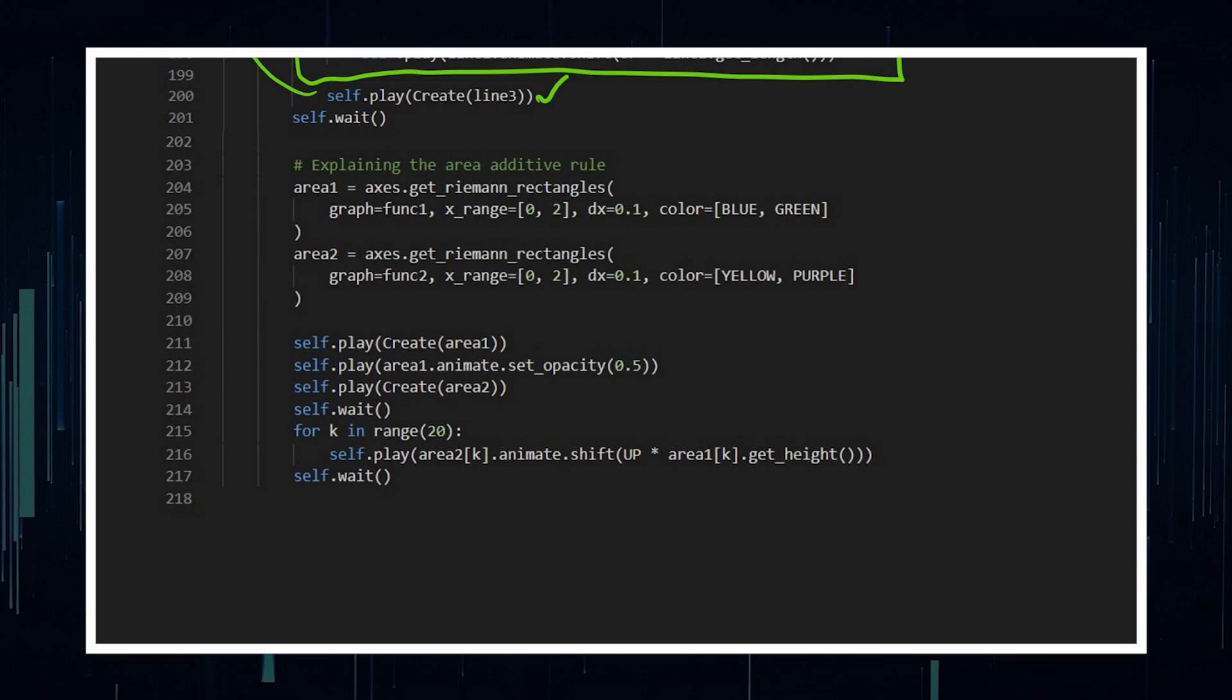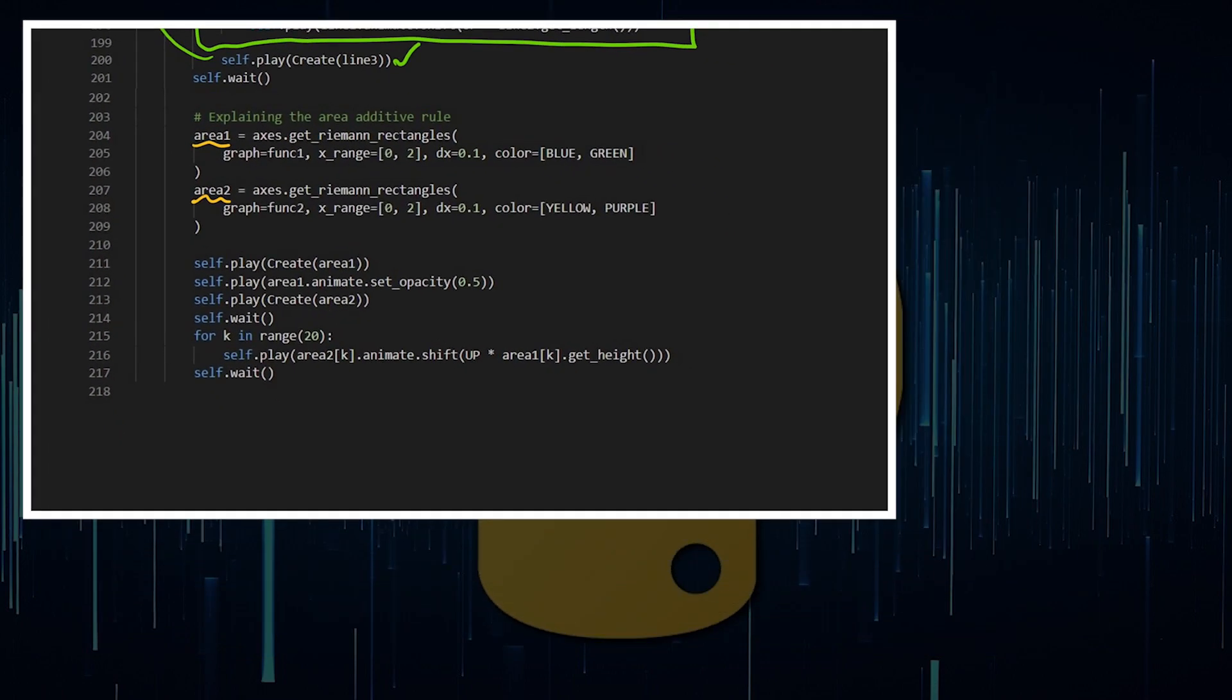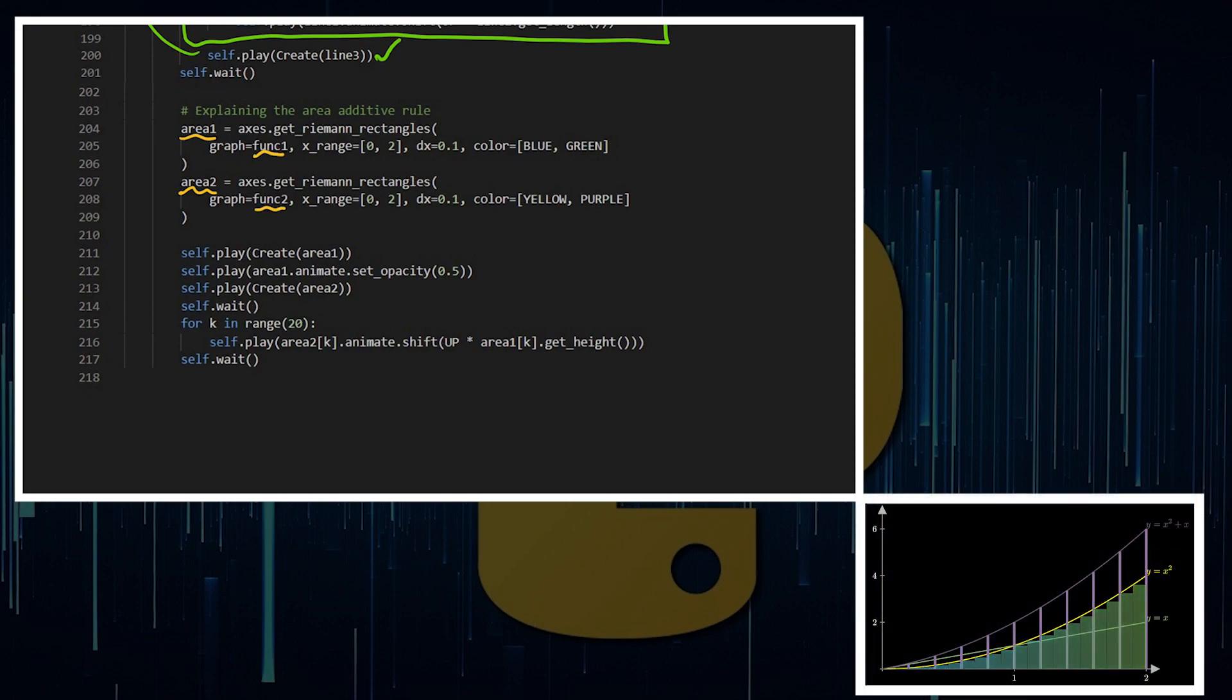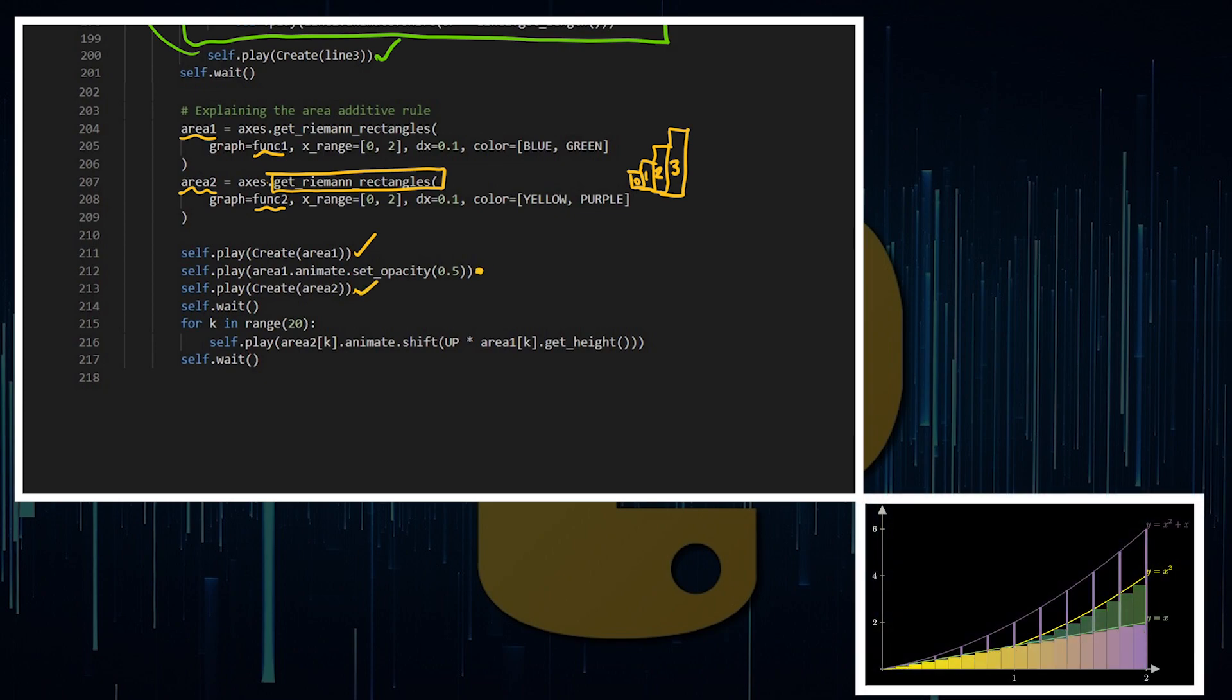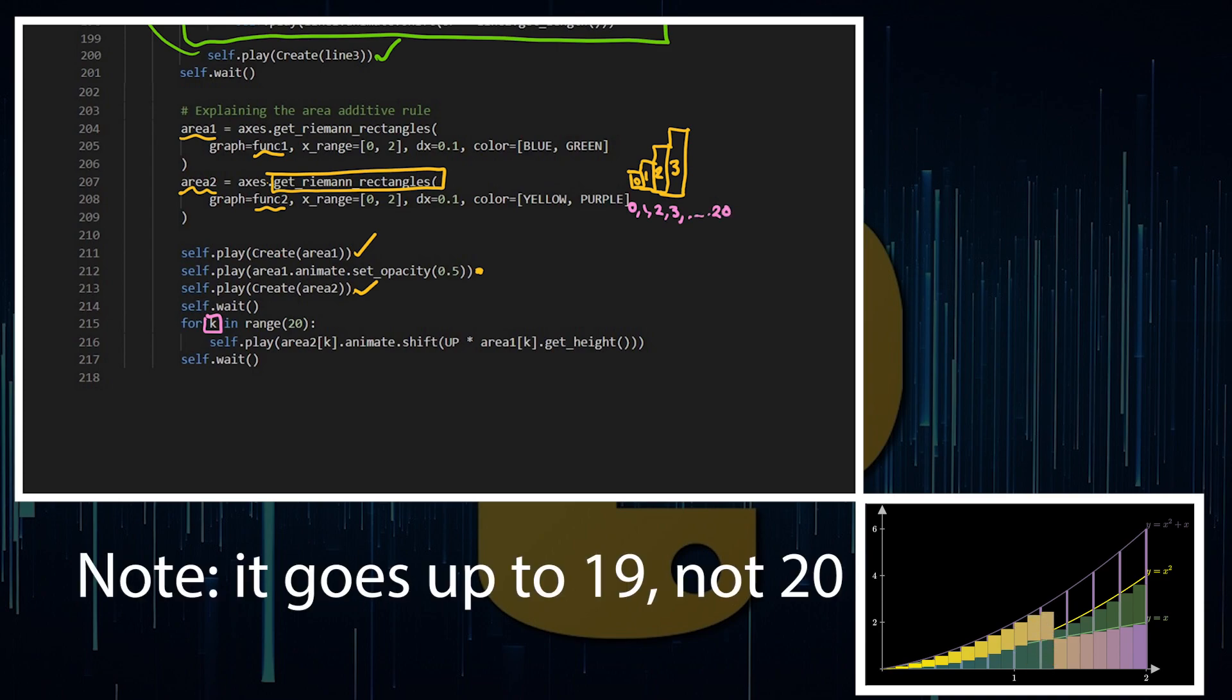And then moving on to how I get the rectangles to move, this is just area 1 and area 2. We're calling one on function 1 and one on function 2. Now, when you've got Riemann rectangles, this is a group of rectangles. So you've got the 0th rectangle there, the 1st rectangle, 2nd, and so on. So when you're accessing these Riemann rectangles, get Riemann rectangles, there is a whole bunch of them. It's not just one thing. So you can create it, lower the opacity, and then you can create the second lot, so you can see that you've got two lots of rectangles. Again, utilizing a for loop, so for k in range of 20. So it's going to access 0, then 1, then 2, and 3, all the way up to the 20th rectangle in the group.